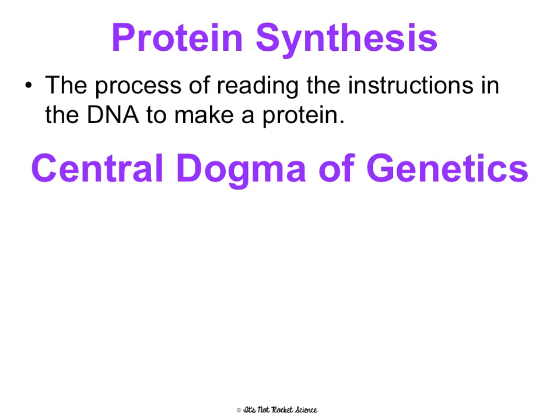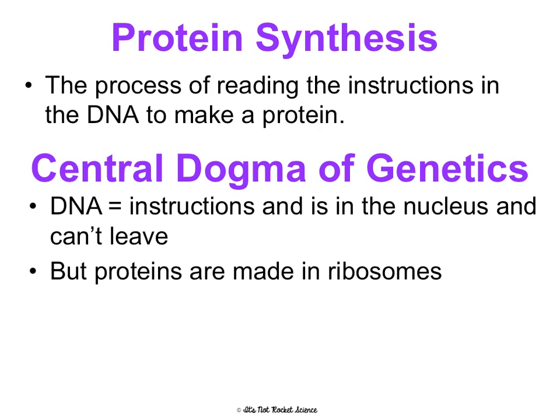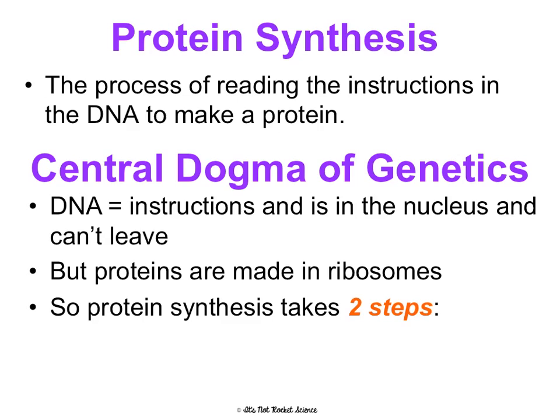The central dogma of genetics — the big idea — is that DNA is the instruction. It's in the nucleus and it can't leave the nucleus, but proteins are made in the ribosomes. So we have to have a way of getting from the instructions to where they're actually made. It's like baking a cake in your kitchen, but the recipe book is in a different building. That's why protein synthesis takes two steps.